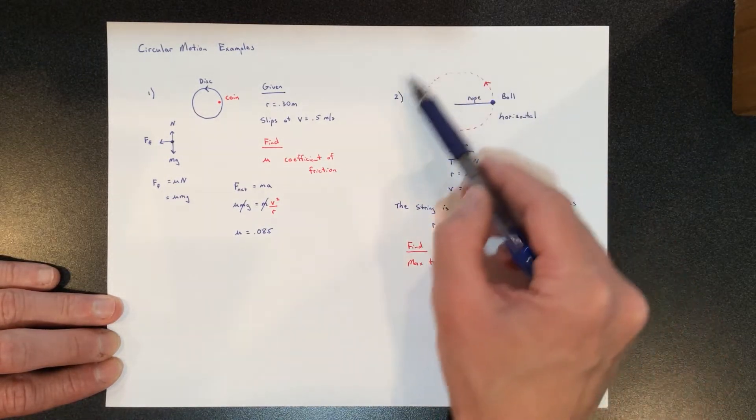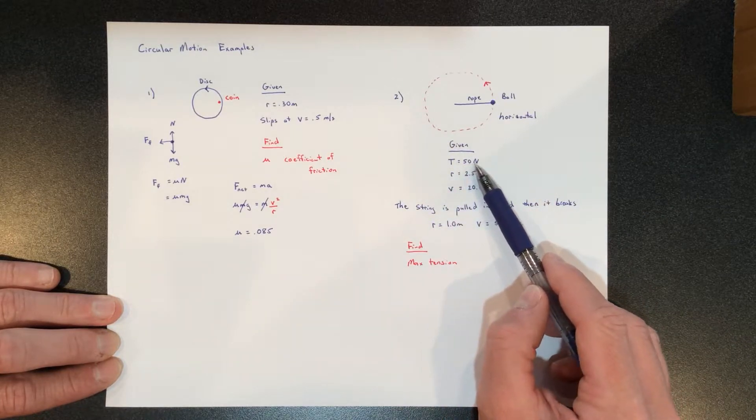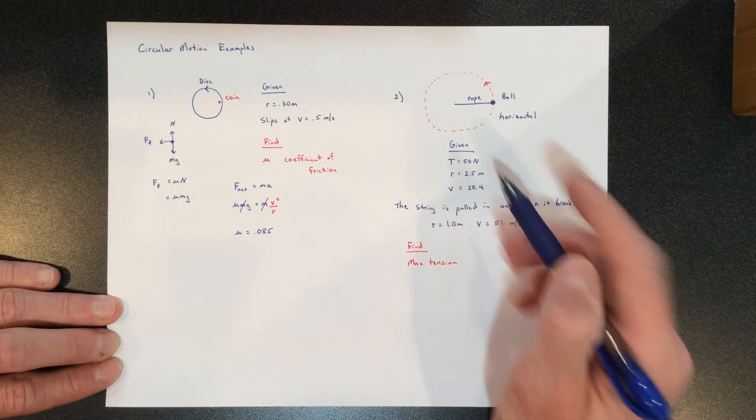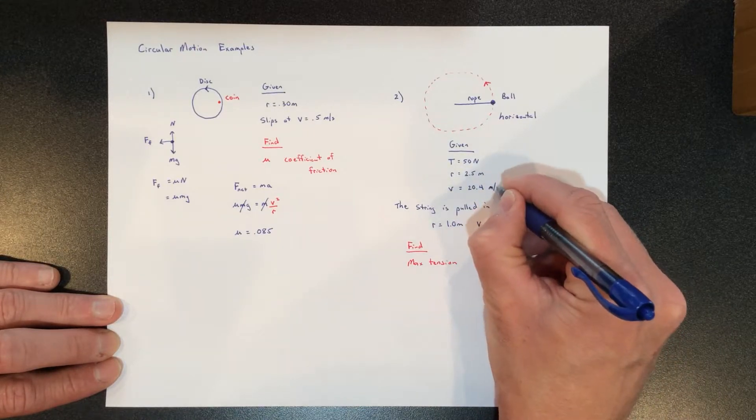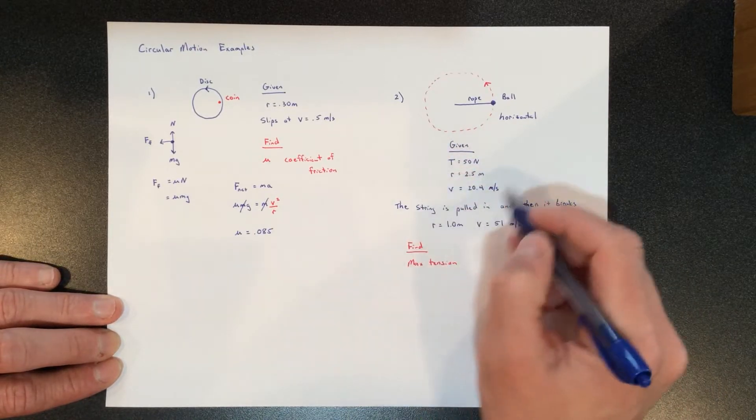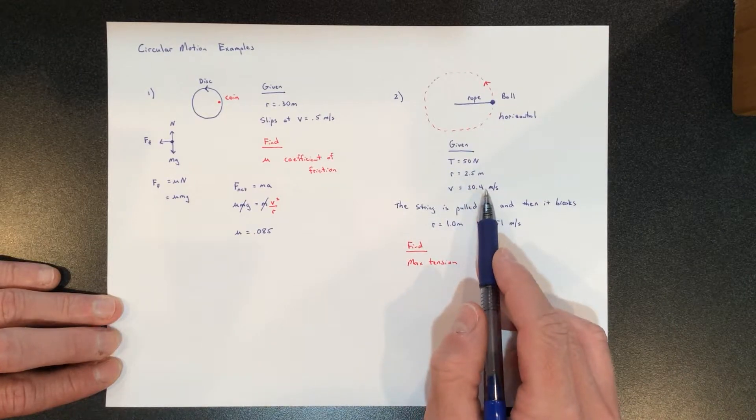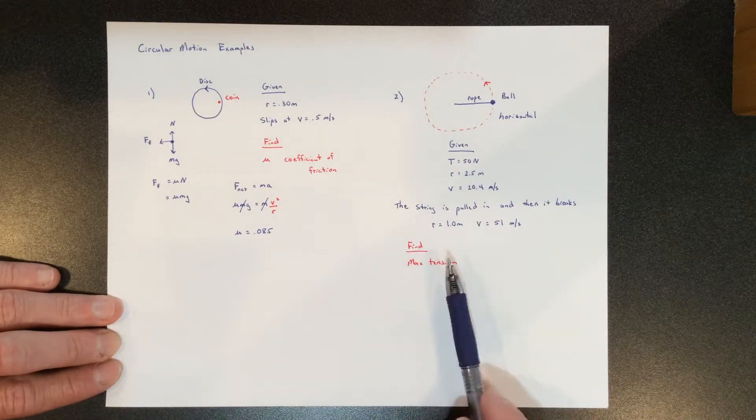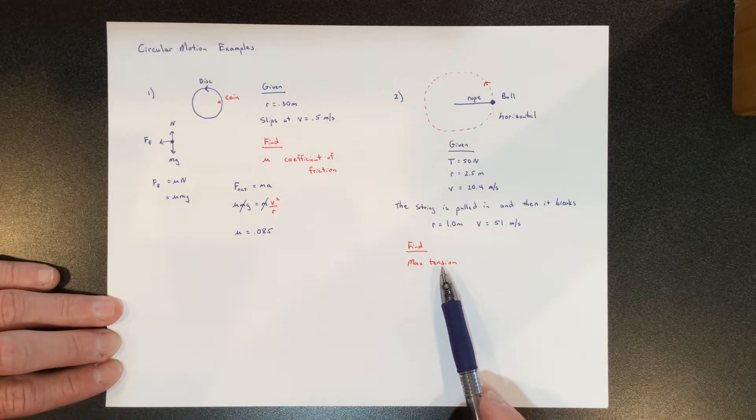What we know is that when we whip this thing around—whipping this ball around—the tension in the rope is 50 newtons when the radius is 2.5 meters at a velocity of 20.4 meters per second. That's the given information that's going to help us find something.